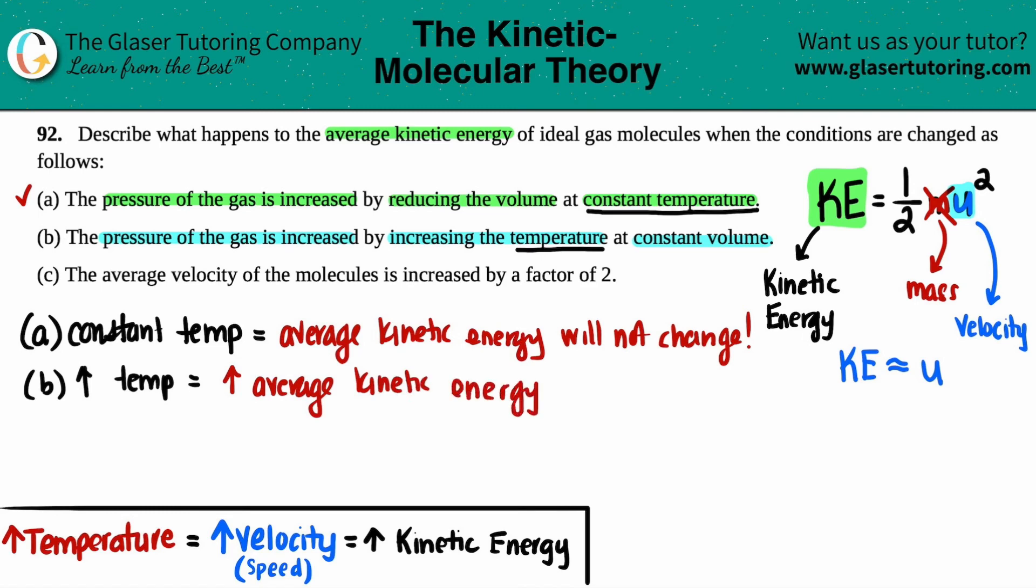Last one. So these are quick now, since we know the background knowledge. So letter C. The average velocity of the molecules is increased by a factor of two. Now this is going back to that equation. If you're jacking up the velocity by two times the amount, that's what it said. The average velocity is increased by a factor of two. What's going to happen?